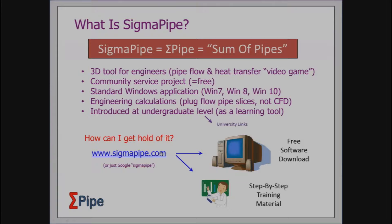Now, what is this thing? If you can imagine, you take a mixing bowl and toss into it video game programming, a copy of Perry's Chemical Engineering Handbook, and a copy of Coulson and Richardson Volume 1 for good measure, and you mix it all up together — that's what you get. It's a video game for pipe flow and heat transfer.